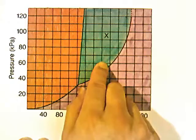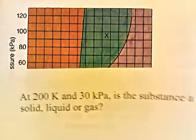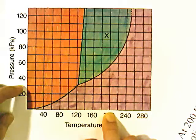At 200 Kelvin and 30 kilopascals, is the substance a solid, liquid, or a gas? 200 Kelvin and 30 kilopascals is right here — it falls in the purple region, so our substance is going to be a gas.